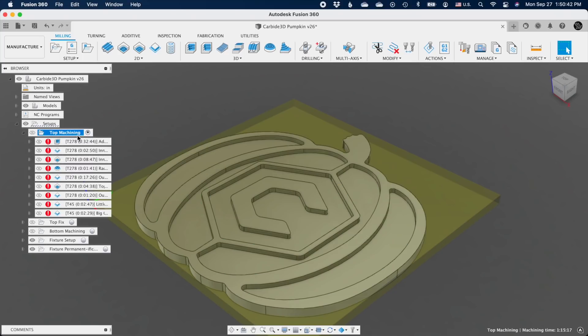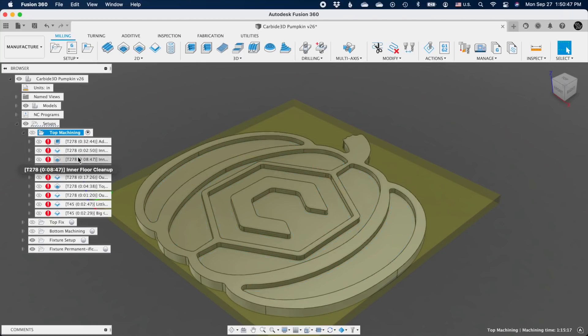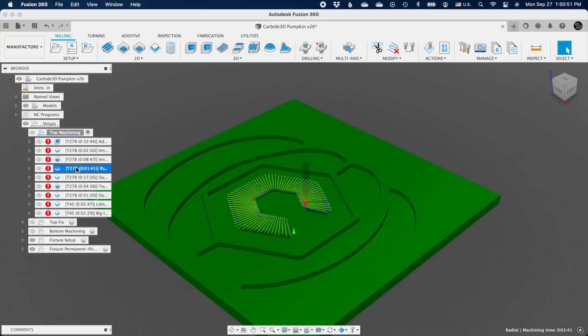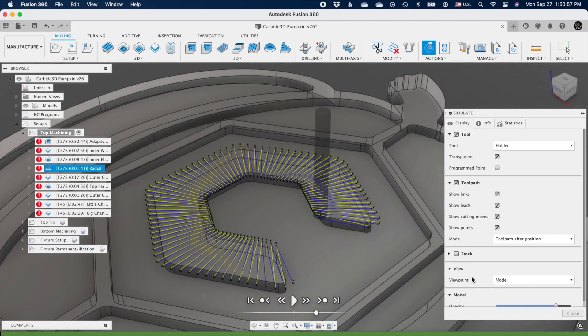The first toolpath will be an adaptive roughing toolpath constrained to the inside of the pumpkin profile. The next step is to clean up the walls and then the floors of the pockets. Machining is an underrated art form, and one of the things I like doing is choosing a toolpath for the cosmetic finish it leaves. For the carbide C in the middle of the pumpkin, I'm going to use a radial toolpath to finish the face.